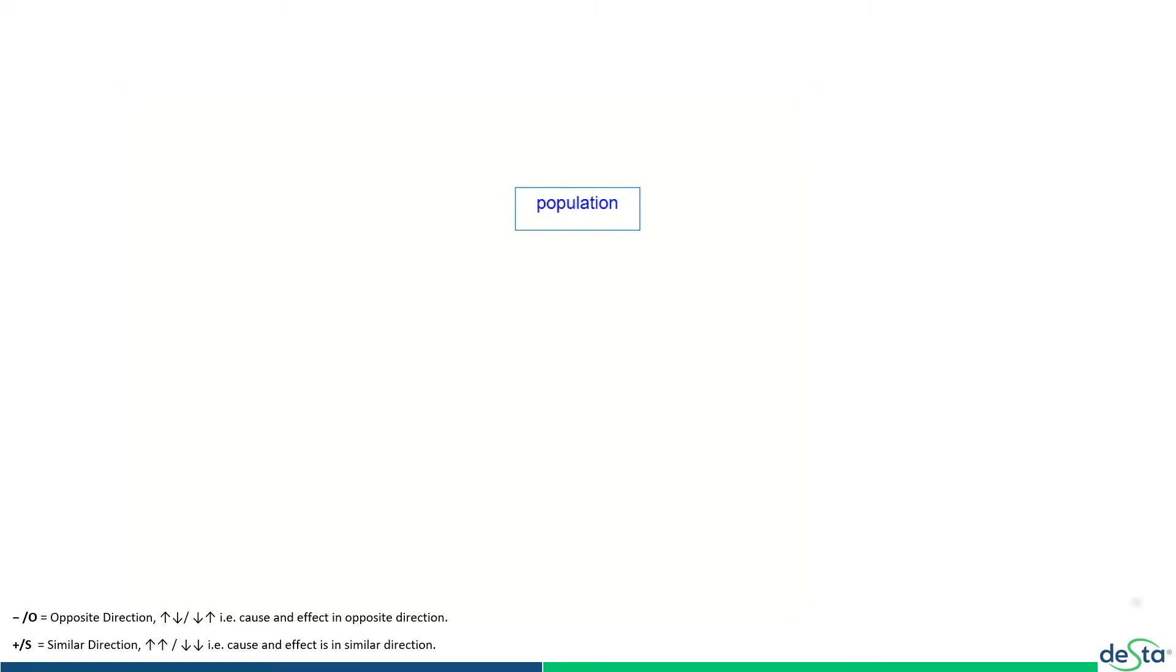We know that population is linked with births and population impacts births, which means the number of people impact the rate at which births are taking place. And as births take place over time, it also changes the population, which means it adds to the population and increases it.